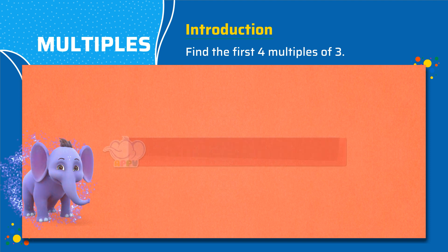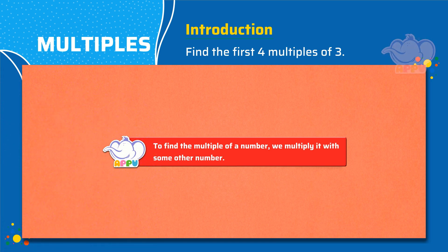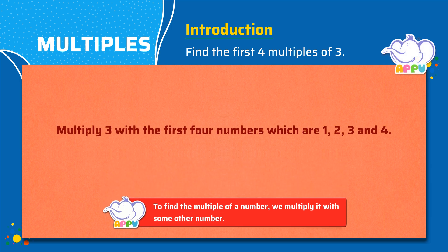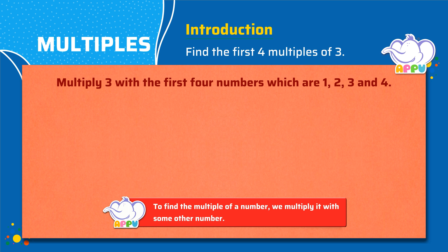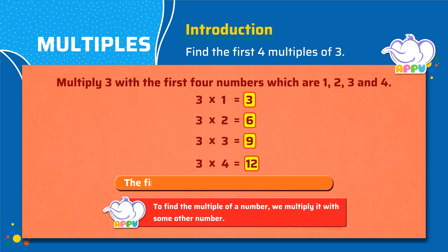Let's find the first 4 multiples of 3. To find the multiple of a number, we multiply it with some other number. To find the first multiple of 3, we multiply 3 and 1, that is 3. To find the second multiple of 3, we multiply 3 and 2, that is 6. For the third multiple of 3, we multiply 3 and 3, that is 9. And for the fourth multiple of 3, we multiply 3 and 4, that is 12. So the first 4 multiples of 3 are 3, 6, 9 and 12.